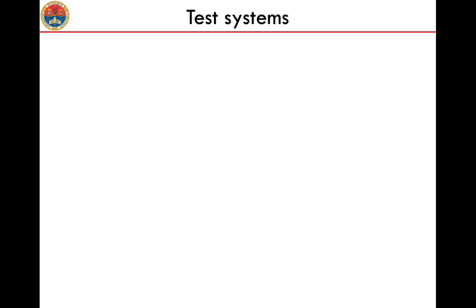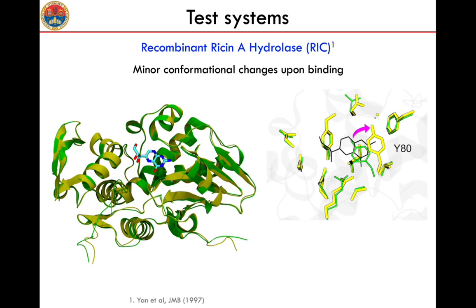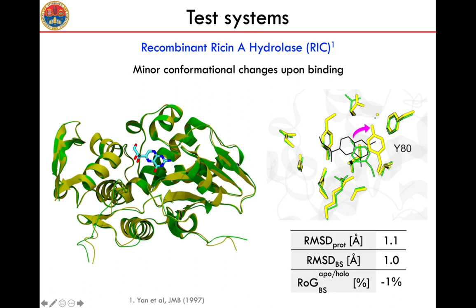As test systems, we use three proteins for which we have the apo and holo high-resolution structures, and also previous computational work using different approaches in order to compare our approach with previous ones. The first system is the recombinant roacine A hydrolase (RISIM). As you can see from the comparison of the apo and holo structures in green and yellow respectively, both at the level of global and local conformational change, it undergoes very minor structural rearrangements — only a minor change in a tyrosine at the binding site. This corresponds to a variation of 1 Å in RMSD and only 1% in terms of radius of gyration.